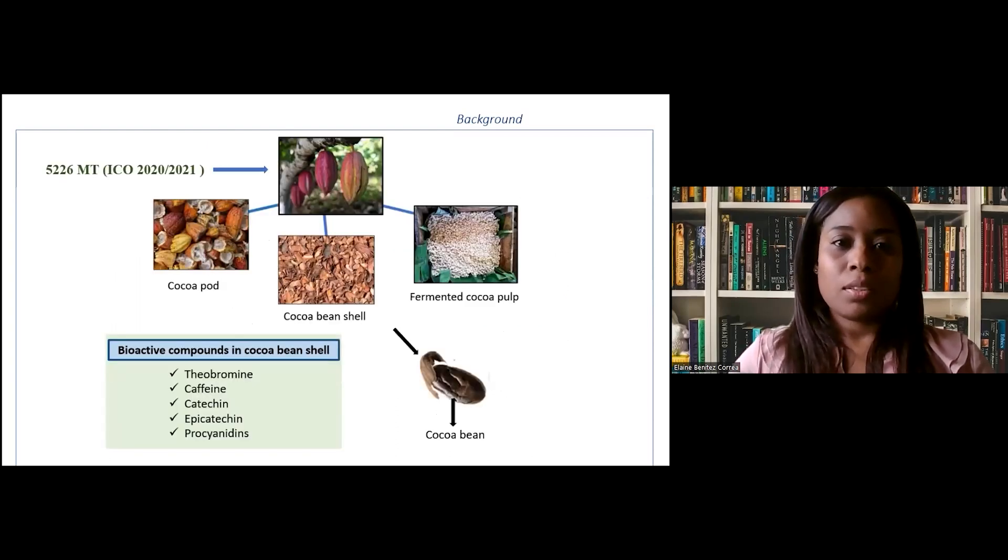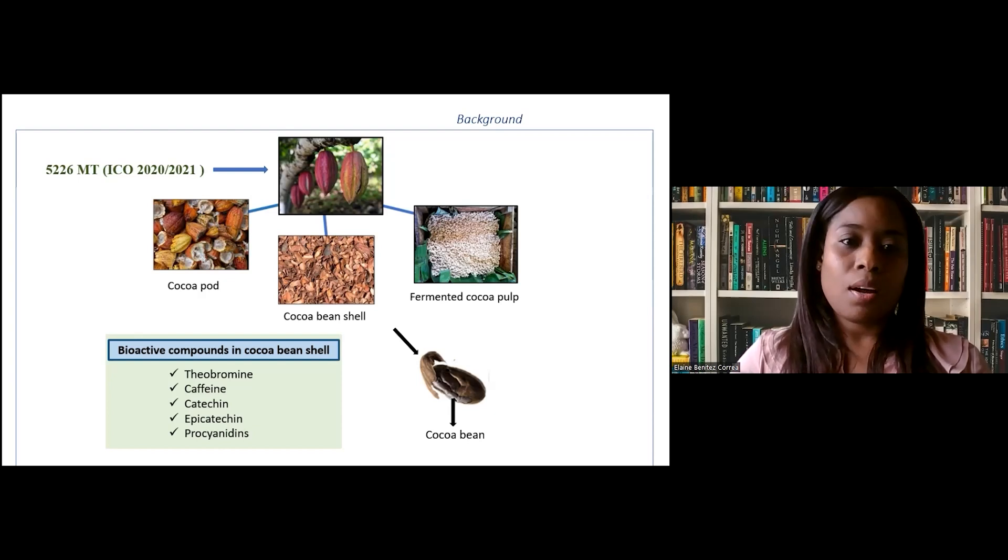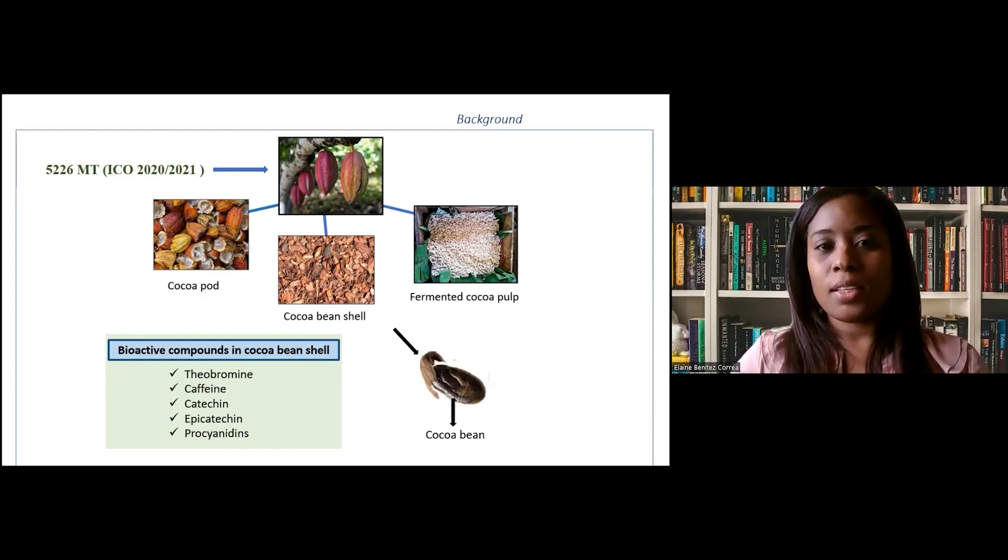On the other hand, plant residues are a sustainable source of high value compounds. Specifically, world cocoa production for the last two years was 5,226 metric tons according to the International Cocoa Organization, and around 80% of total cocoa production are organic wastes such as pericarp, cocoa bean shell, and fermented mucilage. During the harvest process, biochemical reactions occur inside cocoa bean and some molecules migrate from cotyledon to periphery and are trapped by the shell. This cocoa bean shell becomes rich in bioactive compounds, mainly theobromine, caffeine, and flavonoids such as catechins.